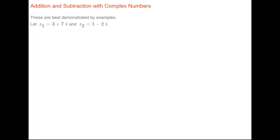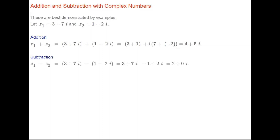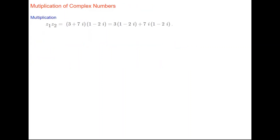Complex numbers can be added or subtracted; the rules are the same as with ordinary algebra where we add and subtract like terms. With complex numbers we add or subtract the real parts and add or subtract the imaginary parts. So if z1 is 3 plus 7i and z2 is 1 minus 2i, then z1 plus z2 equals (3 plus 1) plus (7 plus minus 2)i, giving 4 plus 5i. For subtraction: (3 plus 7i) minus (1 minus 2i) — removing the brackets and combining real and imaginary parts — gives 2 plus 9i.